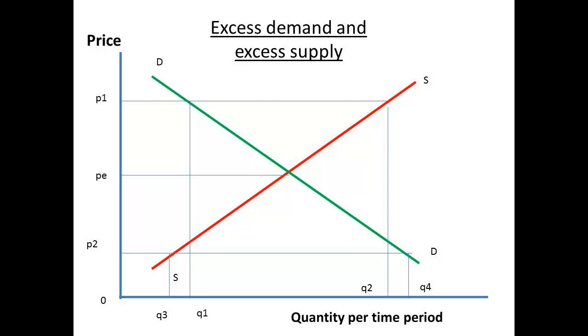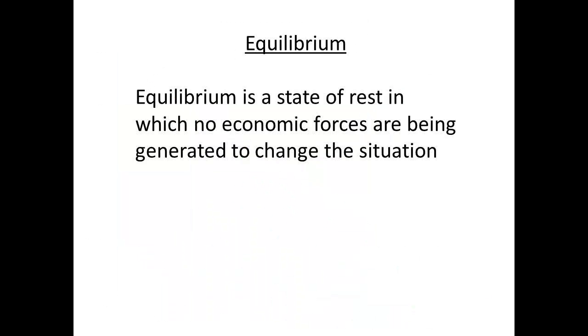When the price is reached PE, then demand and supply are the same. We say we have reached the equilibrium price. In economics, equilibrium is a state of rest in which no economic forces are being generated to change the situation. A stable equilibrium is reached when the economic forces push the prices towards an equilibrium point.